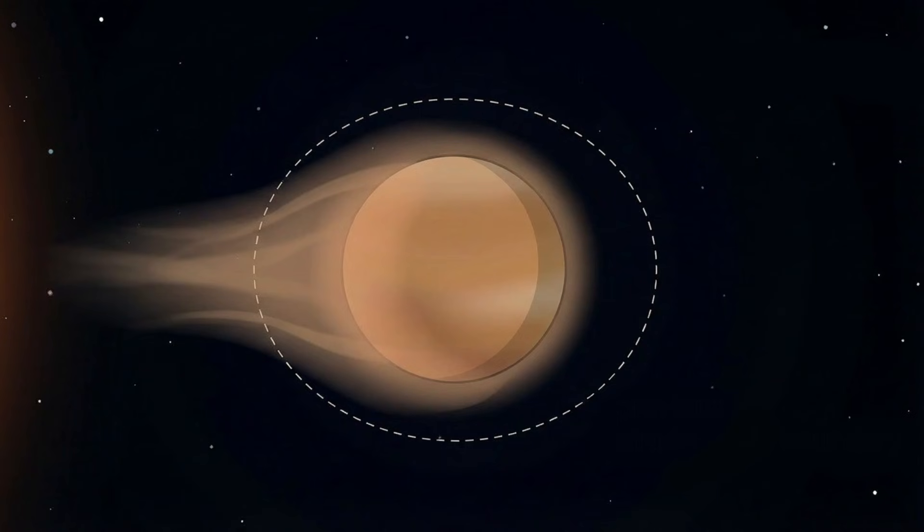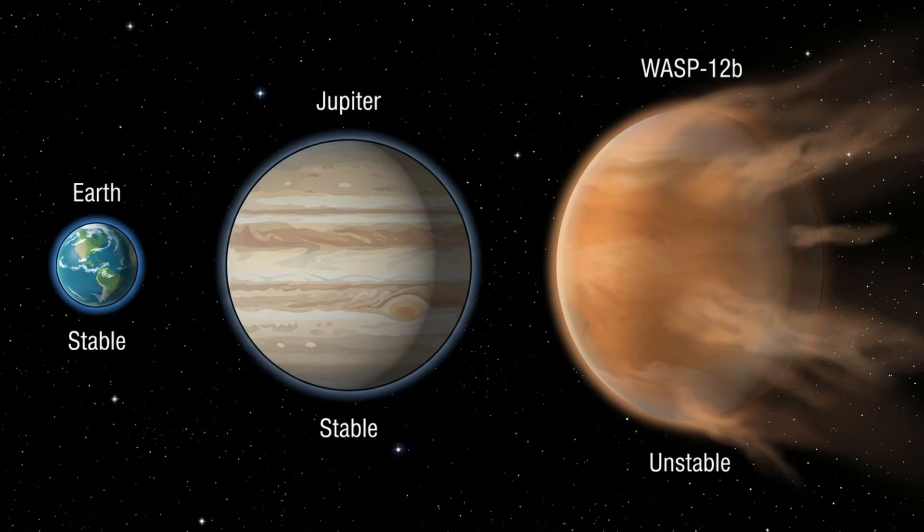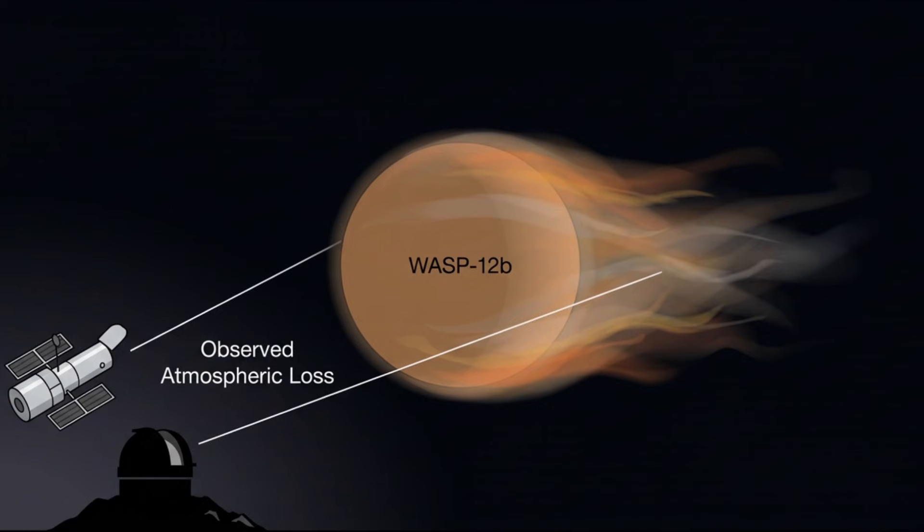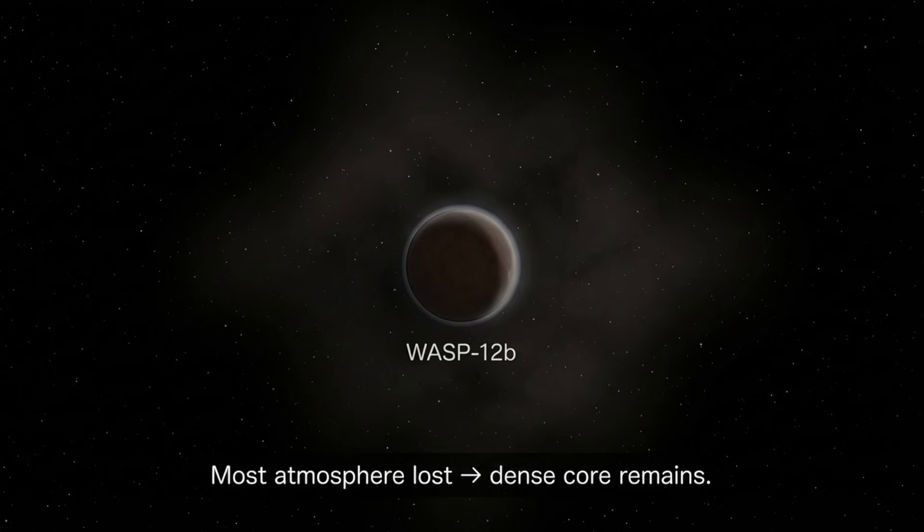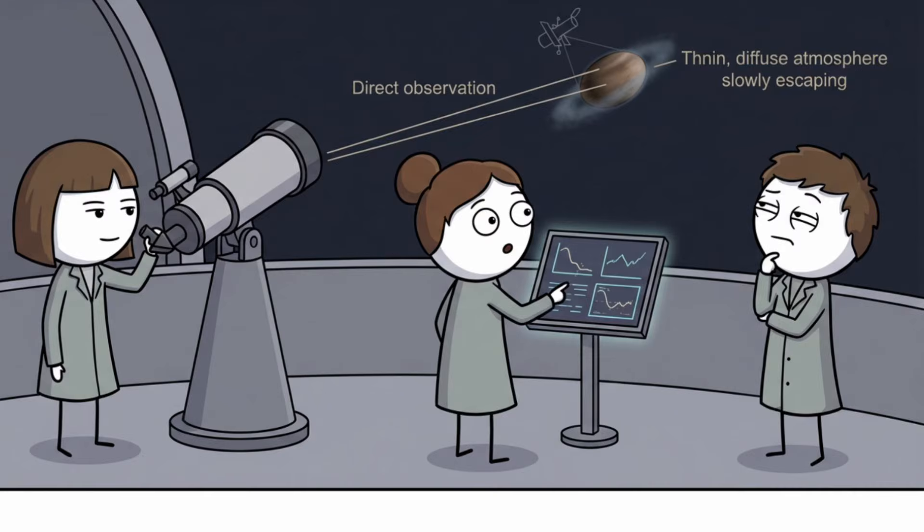WASP-12b is considered one of the weirdest planets ever discovered because it exists in a temporary state. It is not stable like Earth or Jupiter. With every orbit, more of the planet is removed. Over time, it may lose most of its atmosphere, leaving behind a dense core. What astronomers are witnessing is rare. Not just an extreme planet, but a planet in the process of being destroyed.